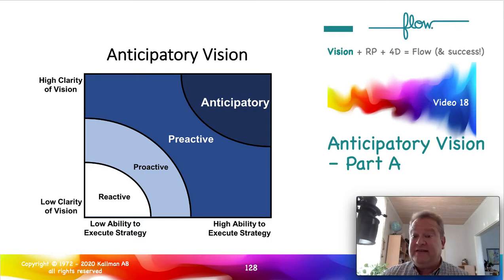Welcome back. This is the 18th video in the Flow Certified Professional Online Training Series. This is Anticipatory Vision Part A, and in this section we're going to talk primarily about the Stacey Diagram, so that's for the individual and team boxes. And then in Part B we're going to talk about the Anticipatory Vision. We'll talk about that in the next video a lot more.